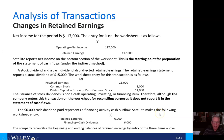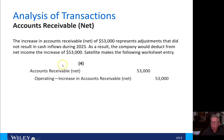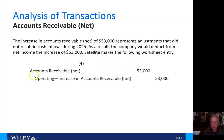The company reconciles the beginning and ending balances of retained earnings by entry of those three items. That schedule shows overall the changes in retained earnings. For accounts receivable, the increase of $53,000 represents adjustments that did not result in cash inflows during 2025. As a result, the company deducts from net income the increase of $53,000. Satellite debits accounts receivable net and credits the operating section for the increase in accounts receivable net for $53,000.